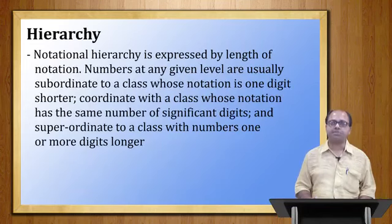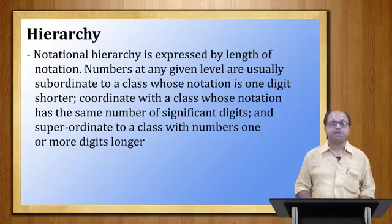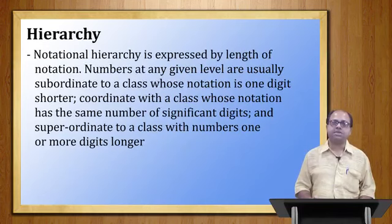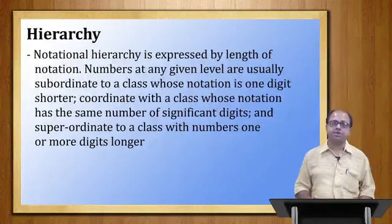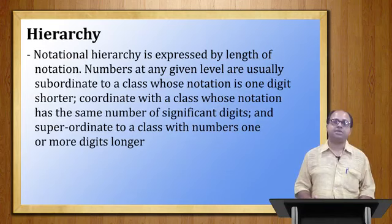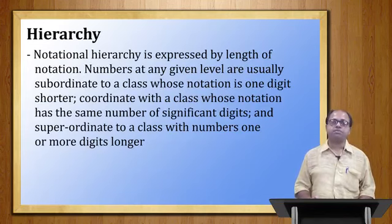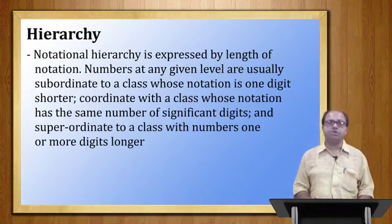For example, take blood chemistry — its class number is 573.154. Here, 5 indicates Natural Science (extreme left), the second digit 7 indicates Life Science, and the third digit 3 indicates Biochemistry. The class indicated by 5 is superordinate to 7. Natural Science is the superordinate class of Life Science, and Biochemistry (indicated by 3) is subordinate to Life Science. Life Science is also the subordinate class of Natural Science.